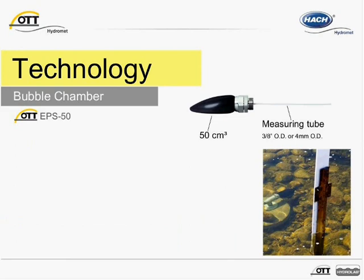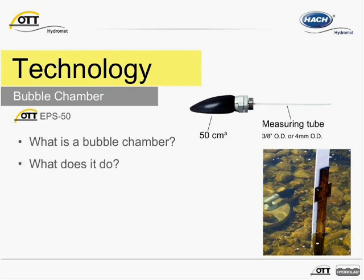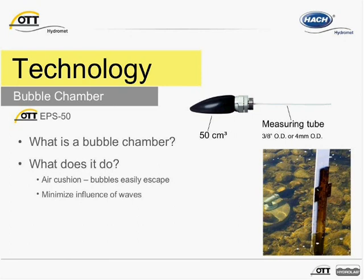You might wonder what a bubble chamber is and what it does. A bubble chamber creates a cushion or buffer that allows bubbles to easily escape the measurement tube when the pressure exceeds the hydrostatic pressure of the water column above the bubble chamber. The bubble chamber shown here is the EPSS50 — a bubble end system with a volume of 50 cubic centimeters. Its deer foot or teardrop design assists with minimizing current pressure effects around the bubble chamber. Bubble chambers also reduce waves near the opening of the measuring tube, minimizing wave influences on measurements and reducing additional data processing. Bubble chambers also prevent water from entering the measuring tube.